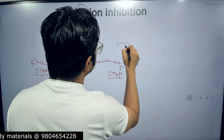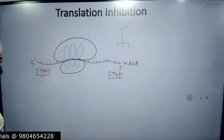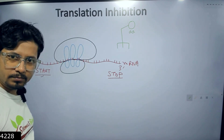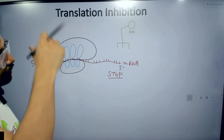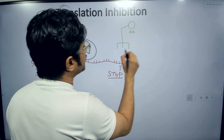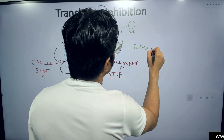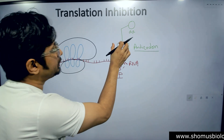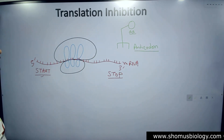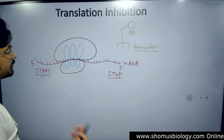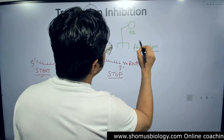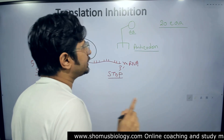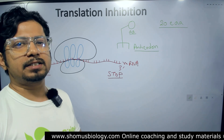The tRNA carries an amino acid. The tRNA has an anticodon region. Now, there is a specific tRNA for every single amino acid — there are 20 essential amino acids and for all 20 there are 20 tRNAs present, one tRNA for every single amino acid type.